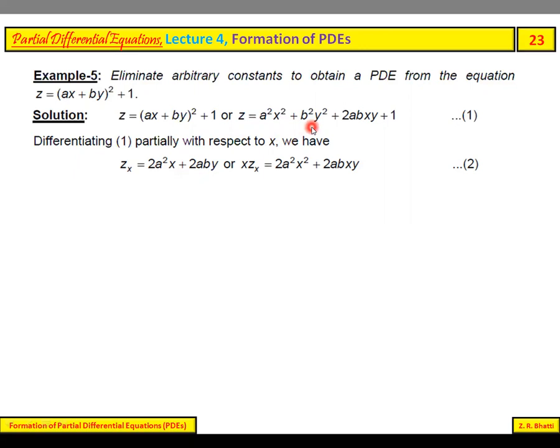Similarly, b²y² term vanishes, giving a²x² and 2abxy. The derivative of x² is 2x, so we get 2a²x plus 2aby.